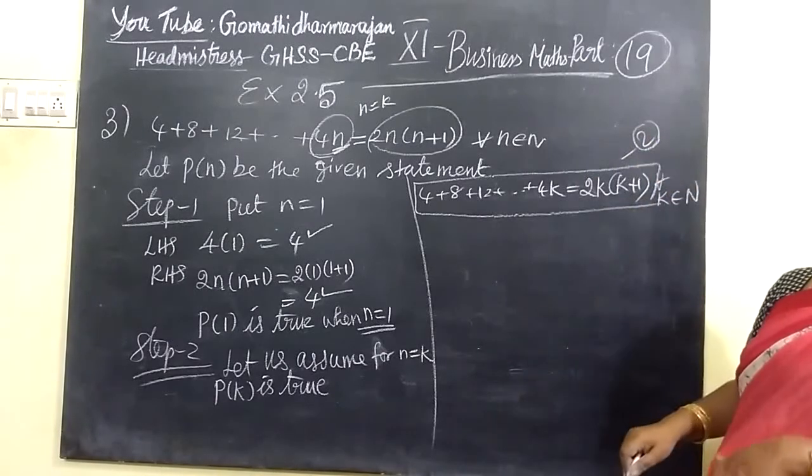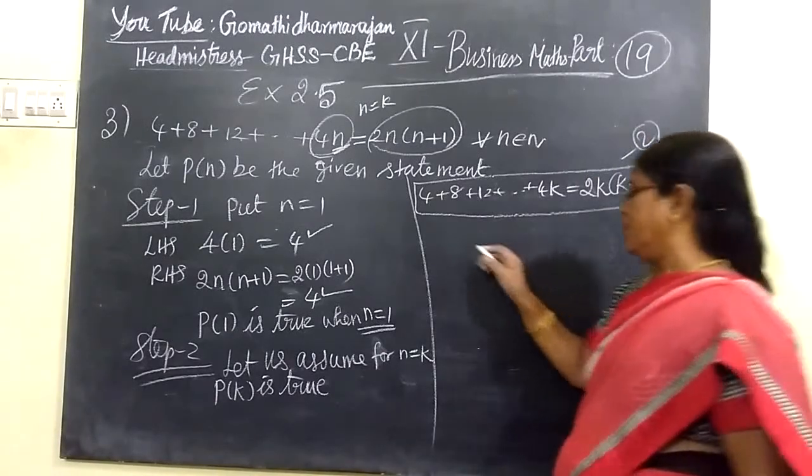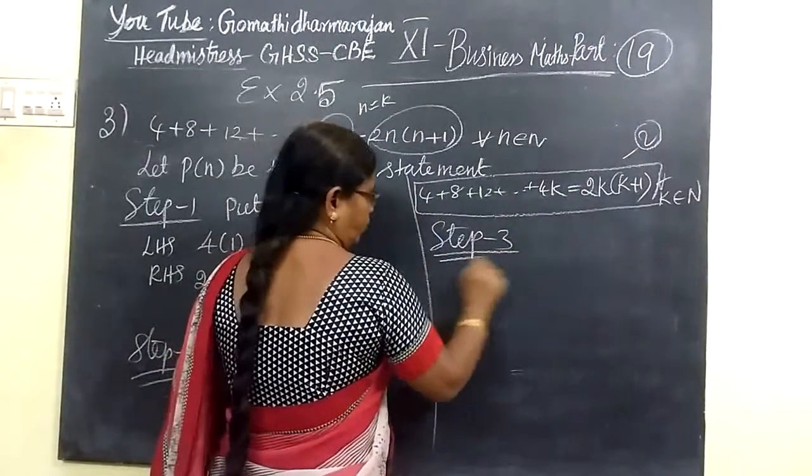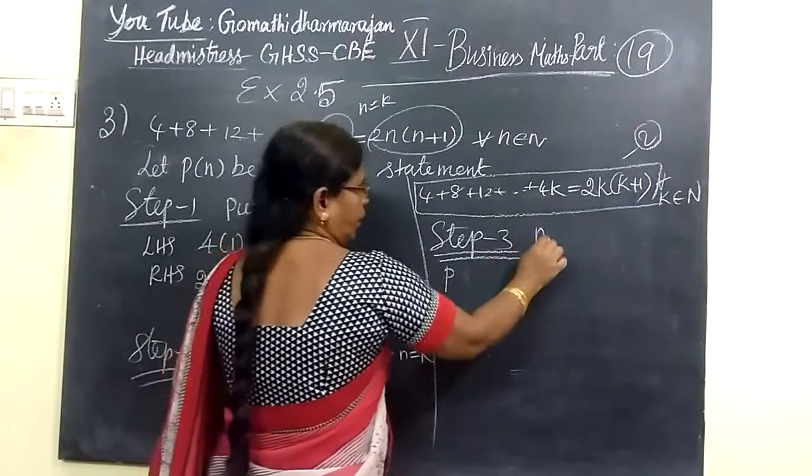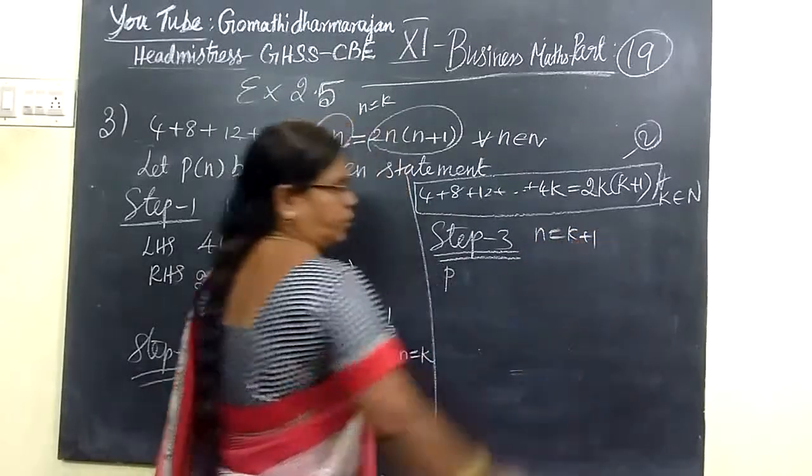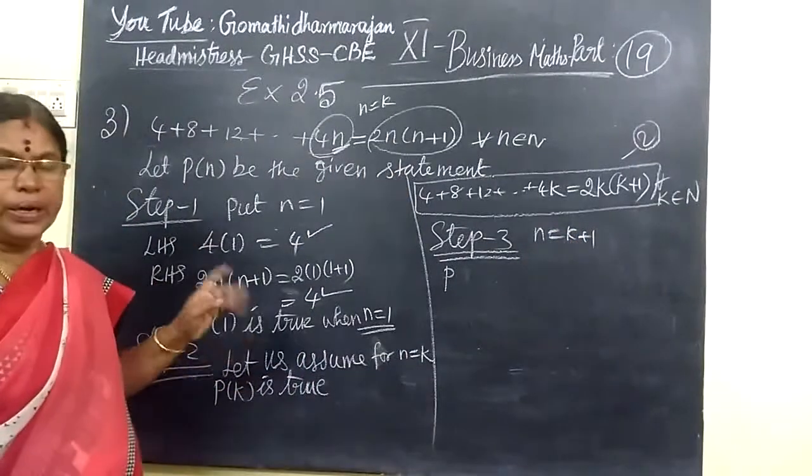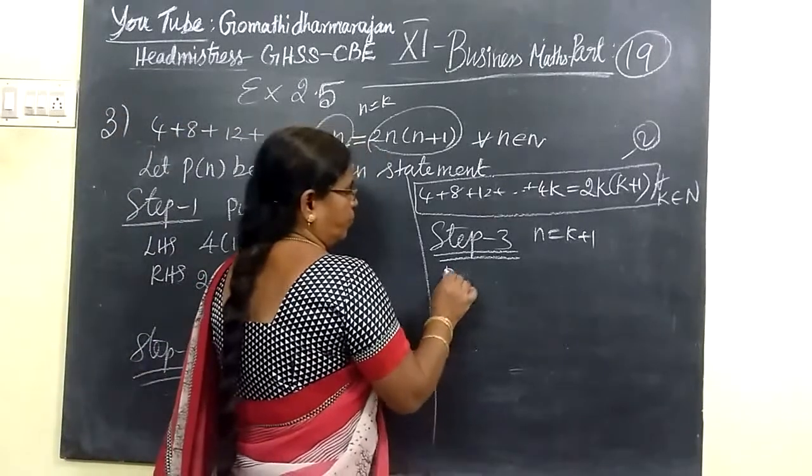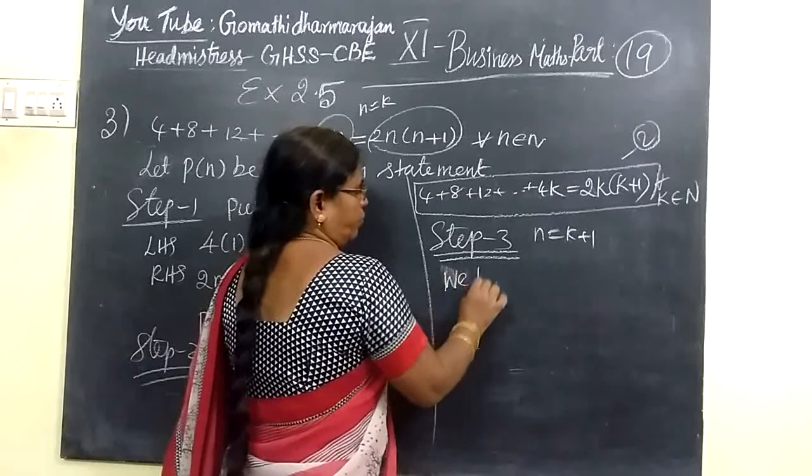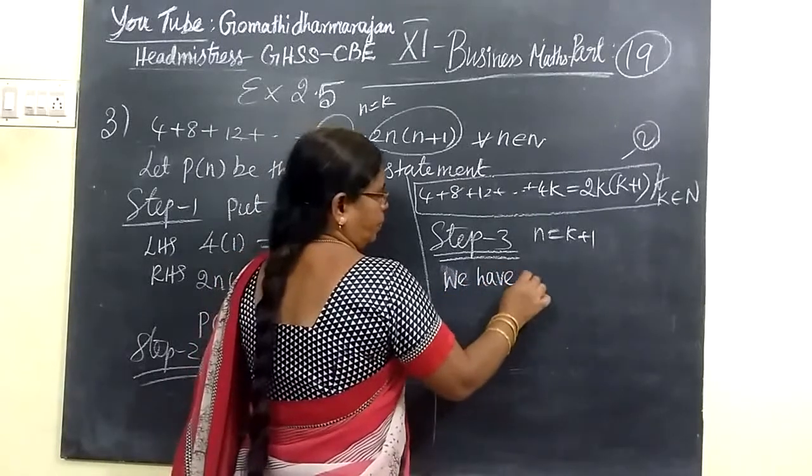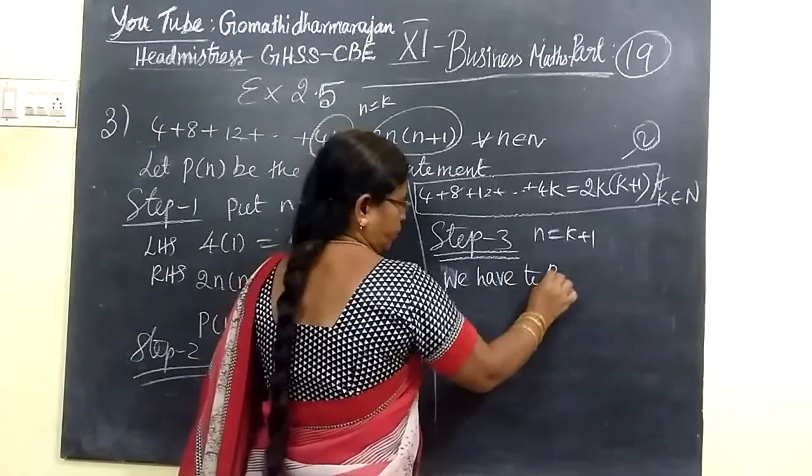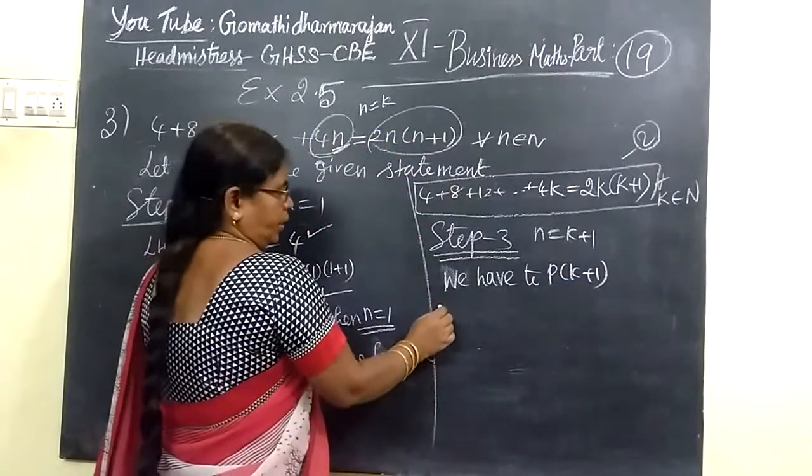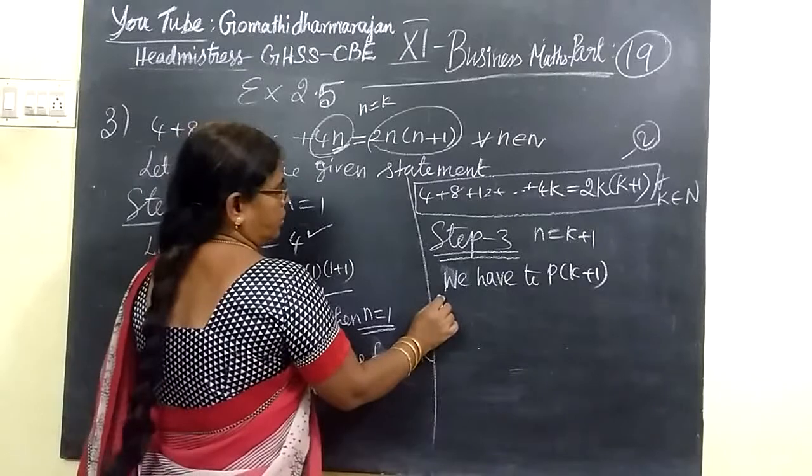In the step 2 you explained, we are going to do step 3. So in step 3 we have to do, N will be K plus 1. First N equal to 1, then N equal to K, then N equal to K plus 1. So we have to prove.